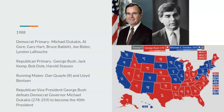In 1988, before the October surprise of the USSR crashing, the Democrat primary involves Michael Dukakis, Al Gore, Gary Hart, Bruce Babbitt, Joe Biden, and Lyndon LaRouche. The Republican primary is George Bush, Jack Kemp, Bob Dole, and Harold Stassen. Bush and Dukakis win their respective primaries. Bush picks Quayle and Dukakis picks Benson — no surprises. Many people felt Reagan took down the USSR, but at the same time, people thought: we've been run by Republicans for almost 24 years, time for a change. Republican Vice President George Bush defeats Democrat Governor Michael Dukakis 278 to 259 to become the 40th President in a very close race.